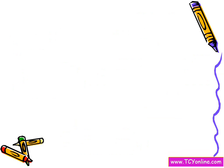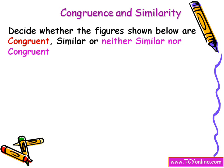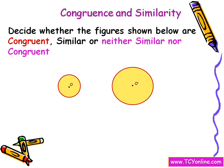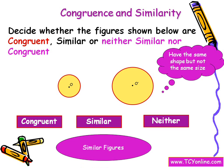Now let's look at one more question on congruency and similarity. You need to decide whether the given figures are congruent, similar, or neither similar nor congruent. We can see that these two figures are the same in shape — both circular — while their size is different. So we say that these two figures are similar figures because they have the same shape but different size.